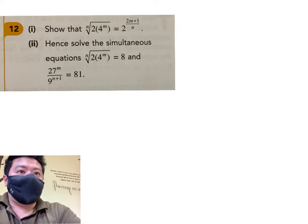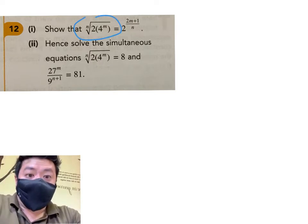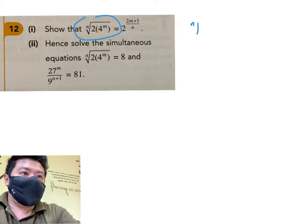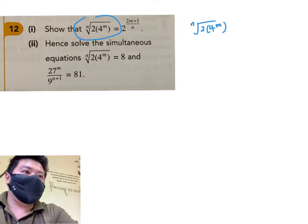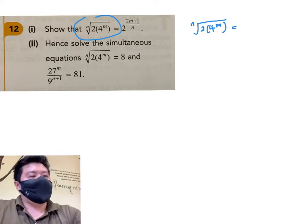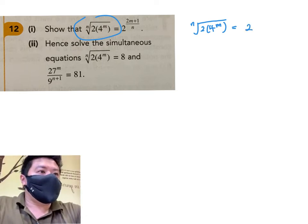So this right portion, n root, we know that n root is the same as to the power 1 over n. So n root on the left-hand side, 2 for power m. This is just the same as me writing it as 2 power 1 inside here.